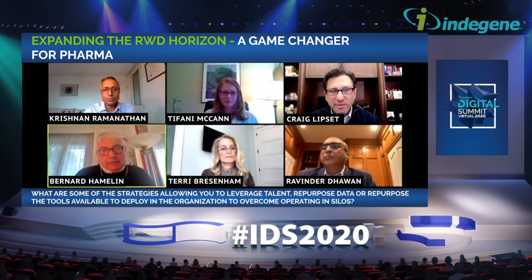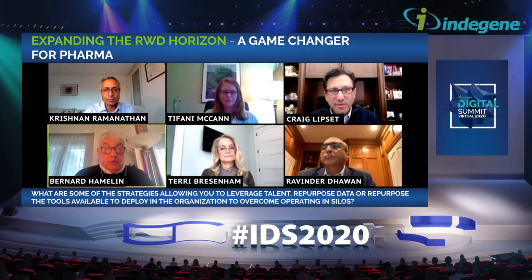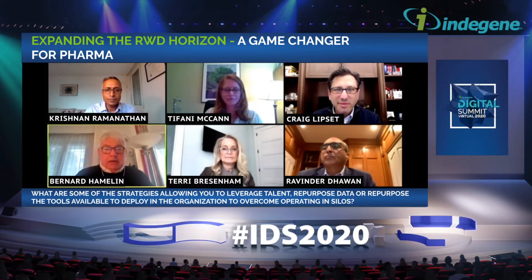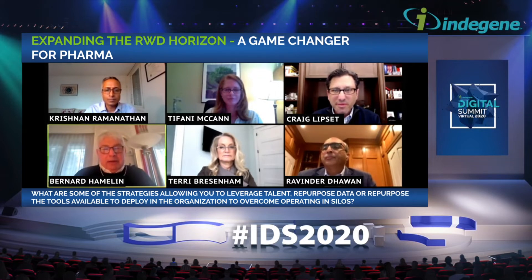We moved from a pure central team to what we call a hub-and-spoke model. We keep centrally the platform, the data, data governance, key methodology, and standardization necessary for a common view across the company. But then we develop spokes in R&D — one in research and one in development — and in the different global business units, to be as close as possible to answering questions at the team level, since a central team becomes a bottleneck. The transformation is ongoing and we're already seeing an acceleration in data use.